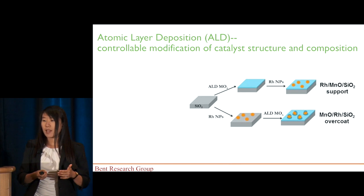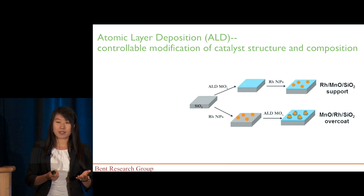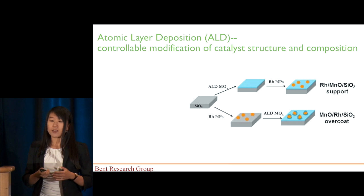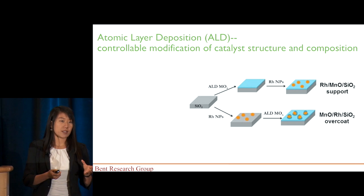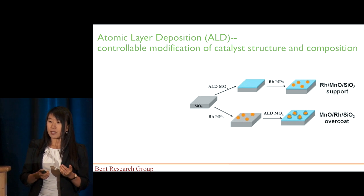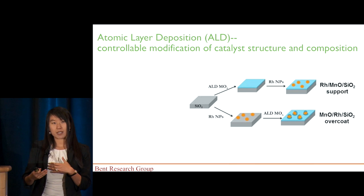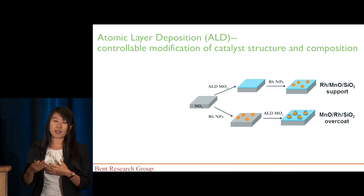We know that in heterogeneous catalysis, the surface properties are crucial. And also, the interface between rhodium and these metal oxide species could play a critical role.